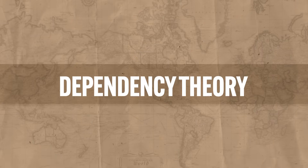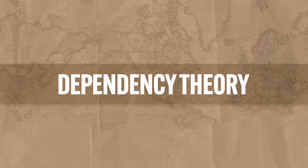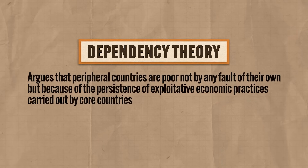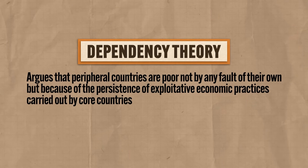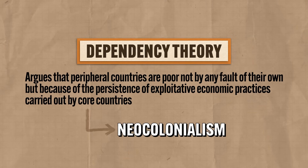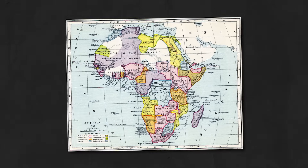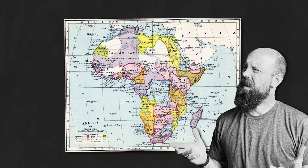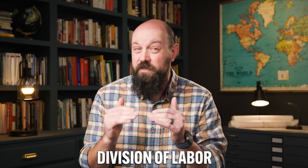Then came along a second theory of development that sought to address the shortcomings of Rostow, known as Dependency Theory. Basically, it argues that peripheral countries are not poor by any fault of their own, but because of the persistence of exploitative economic practices carried out by core countries — what we also call neocolonialism. For many peripheral countries with a colonial past, their economic relationship with their imperial country left them severely disadvantaged in the era of their independence. Even though the colonial era ended a long time ago, those former colonies are still dealing with the effects of that arrangement, because our world economy has developed a hierarchical and very specific division of labor.